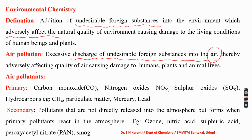The common air pollutants are carbon monoxides, nitrogen oxides, peroxides of nitrogen, sulfur oxides, hydrocarbons, particulate matter, mercury, and lead. The secondary air pollutants are not directly released into the atmosphere; they form when certain atmospheric components react with the primary pollutants.